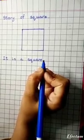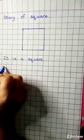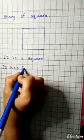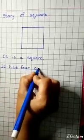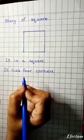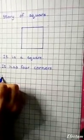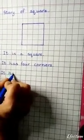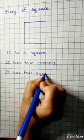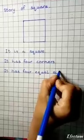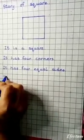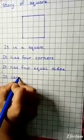And how many corners does the square have? How many sides does the square have? Yes, it has four equal sides. Can it roll? No, it cannot roll.